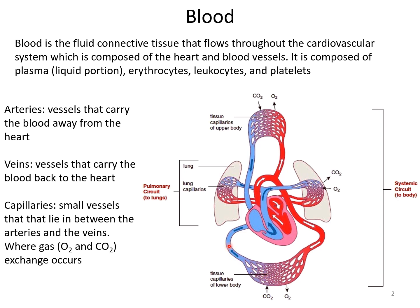As blood exits the capillary bed, it enters a vein — the vessels that bring blood back towards the heart. The blue color indicates it is deoxygenated. It comes back into the heart, which pumps it out towards the lungs. The capillaries in the lungs allow oxygen from inhaled air to enter the blood, which is why you see it go back from blue to red. That newly oxygenated blood returns to the heart, and the whole process repeats.